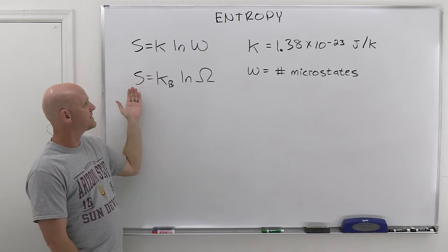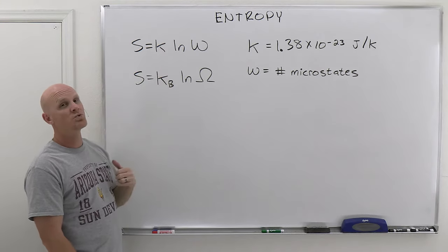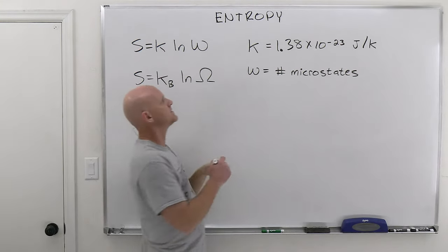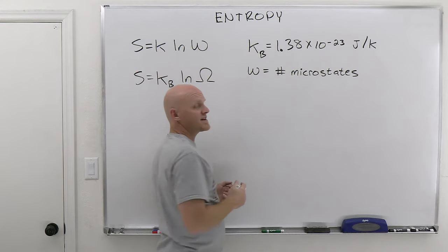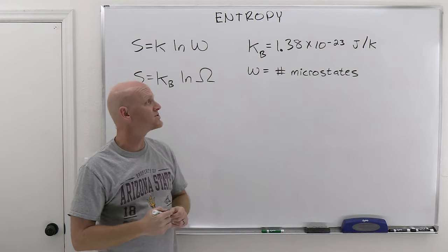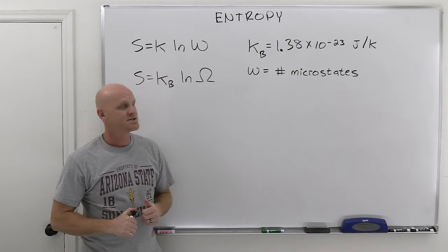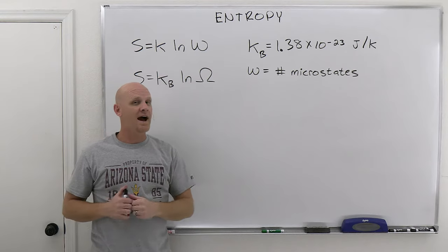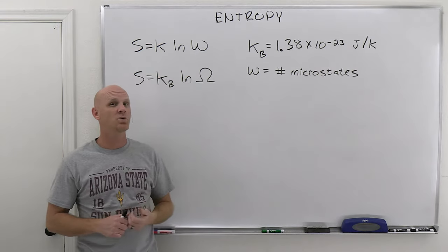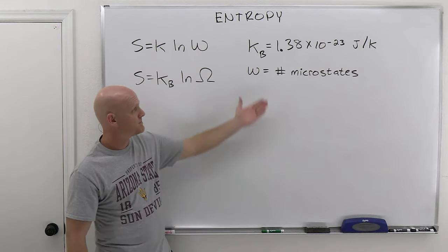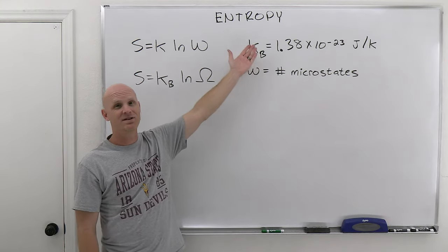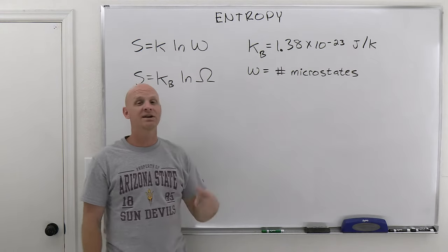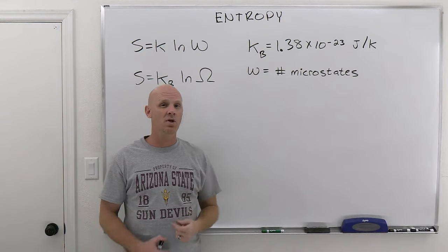The K in that equation is the Boltzmann constant — lowercase kB — so we don't confuse it with the rate constant. The Boltzmann constant is 1.38 × 10⁻²³ joules per Kelvin. If you multiply this by Avogadro's number, you get the universal gas constant, 8.314 joules per mole·Kelvin. The universal gas constant is for an entire mole of a substance, whereas Boltzmann's constant is for an individual atom or molecule.